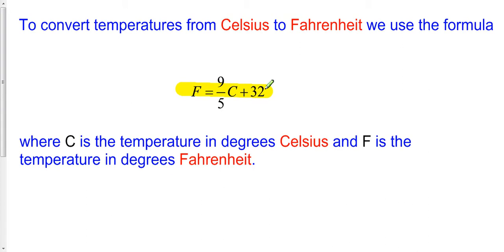So what do the letters mean? C here is the temperature in degrees Celsius, and F is the temperature in degrees Fahrenheit. So we are assuming here we're given a temperature in degrees Celsius, and we need to convert that to degrees Fahrenheit.